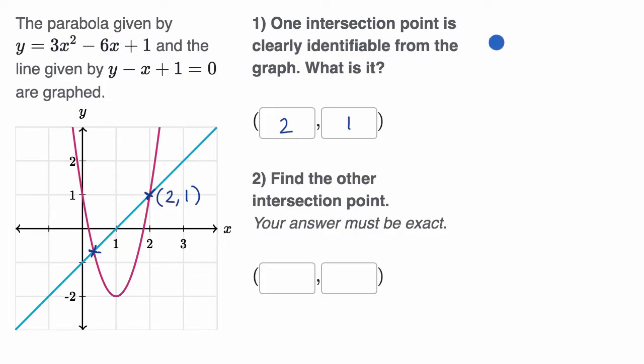Let me write down the equations. I have y equals three x squared minus six x plus one. And our next equation, y minus x plus one equals zero.